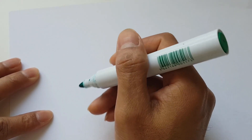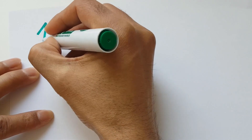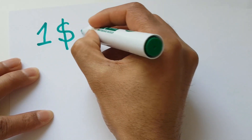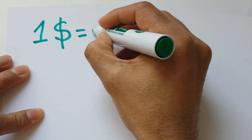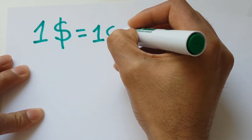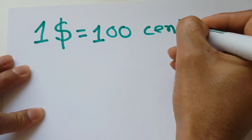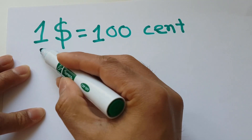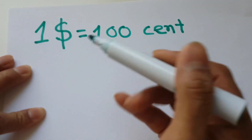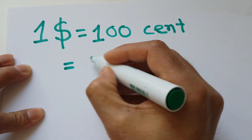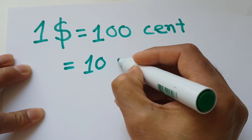To prove it, we know that one dollar equals one hundred cents. Everybody knows that one dollar is equal to one hundred cents. So I can expand this one hundred cents as ten cents times ten cents.